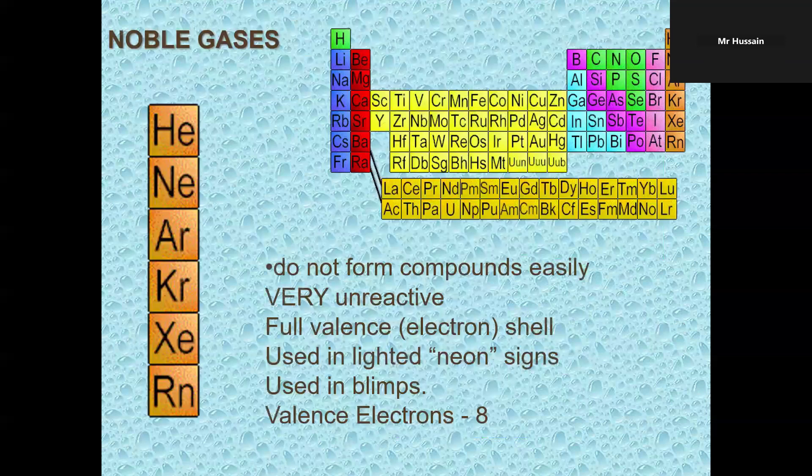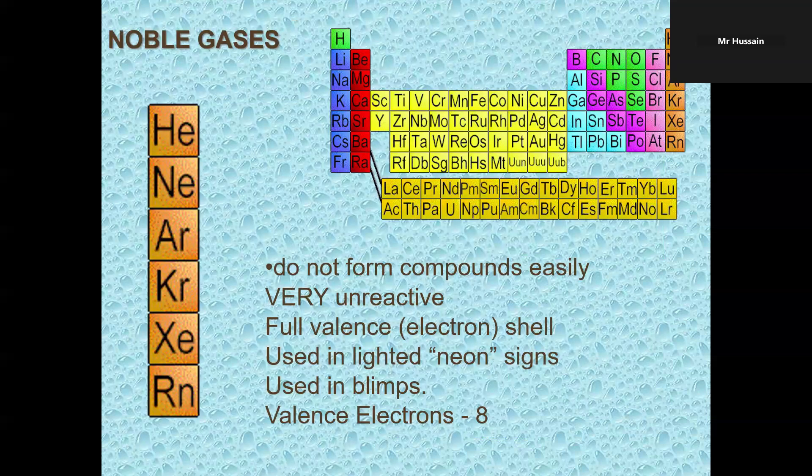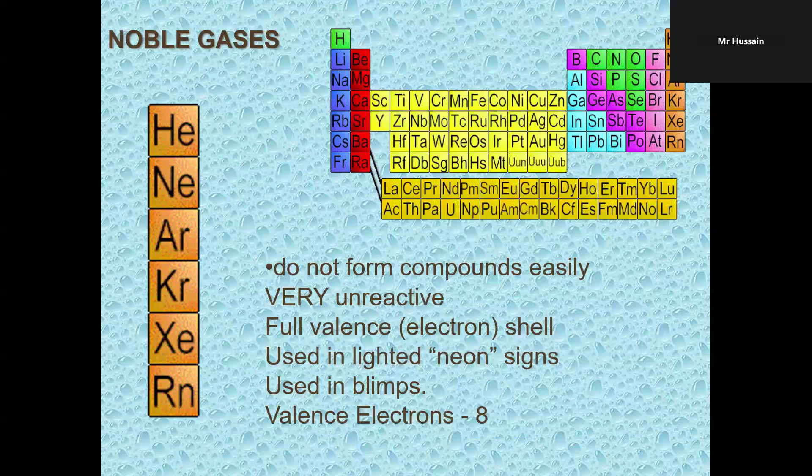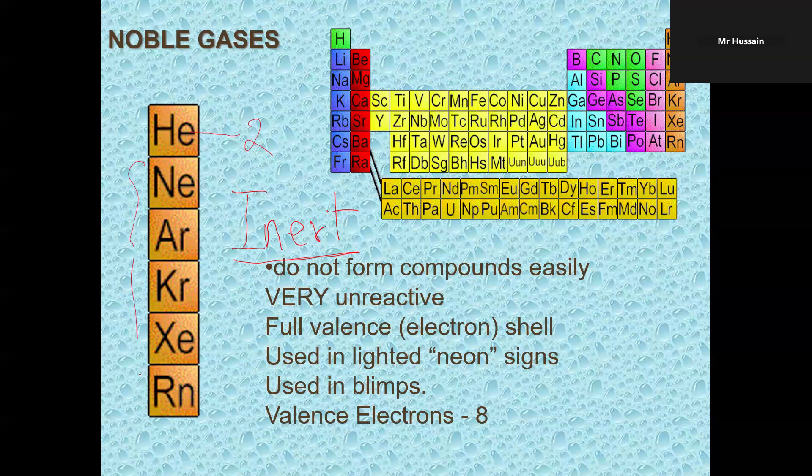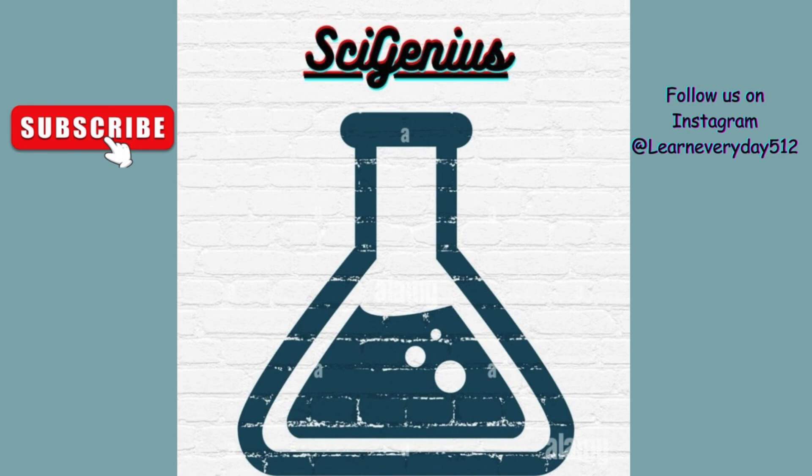Noble gases. You see in group 18, far right column of the periodic table. They are inert. I-N-E-R-T. What does it mean? Inert means they do not react, they do not participate in any chemical reaction. This word inert means unreactive. They do not form compounds. Their outermost electron shell is full. Helium has two valence electrons. All others have eight valence electrons. They are used in lighted neon signs, used in blimps.